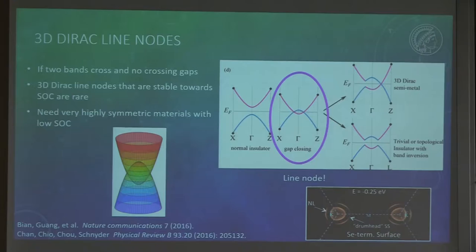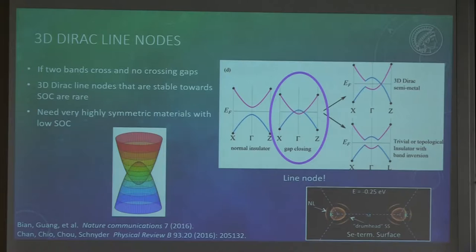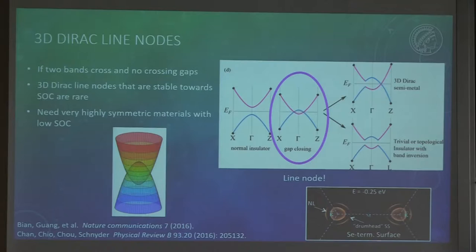Before moving on to case two Dirac semi-metals, I want to mention Dirac line nodes, which people have been looking at recently - those ones also belong to case one. If we are in the band inversion scenario but don't gap at any point in the Brillouin zone, we need a lot of irreps to avoid gapping everywhere around this point, meaning we need really high symmetry materials. It is extremely challenging to find something where this is stable against spin-orbit coupling, so therefore those materials are very rare.